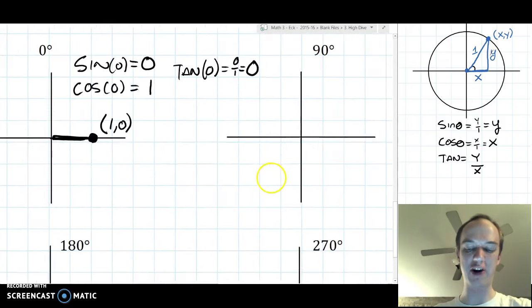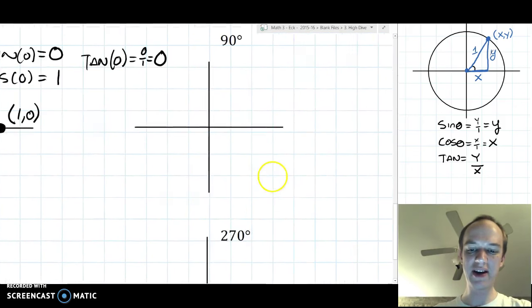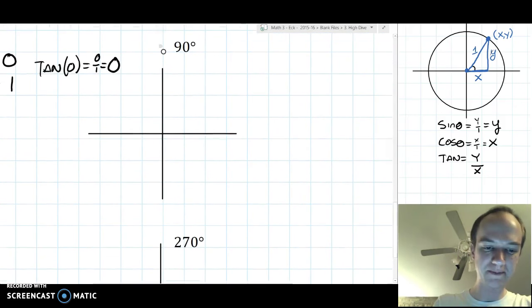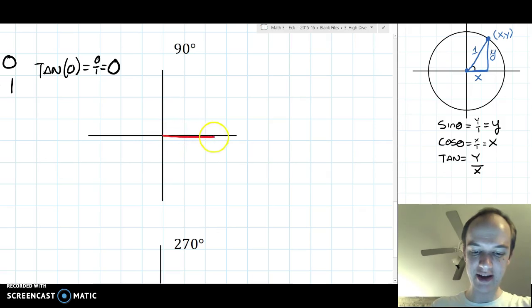Alright, 0 is actually kind of hard, because there's no angle at all. 90 degrees might work a little better. So the initial side of the angle is still right here. You turn 90 degrees.